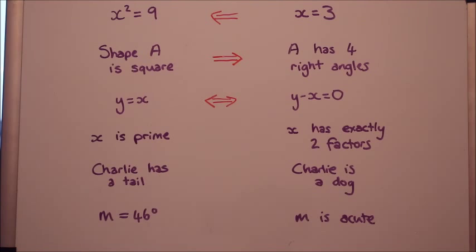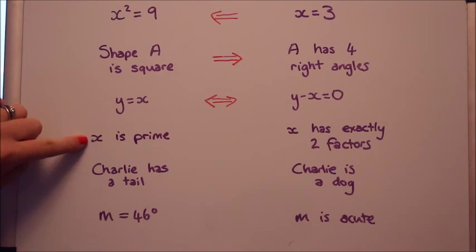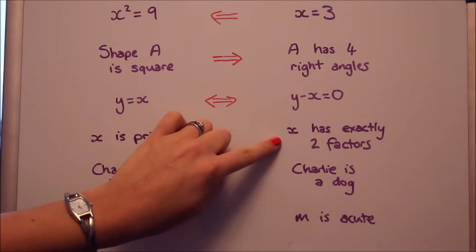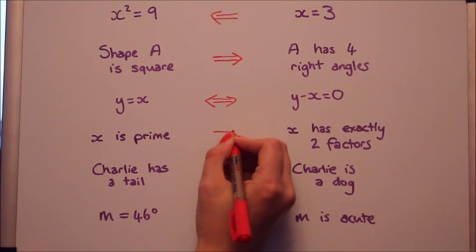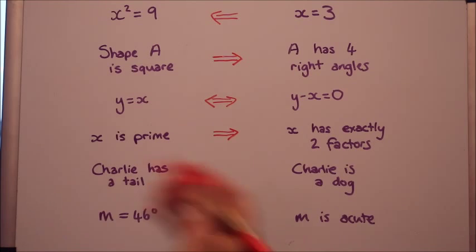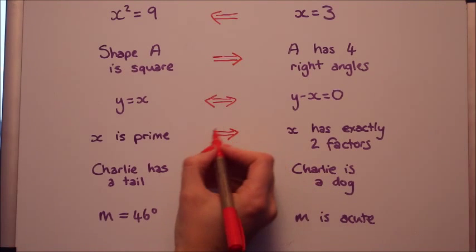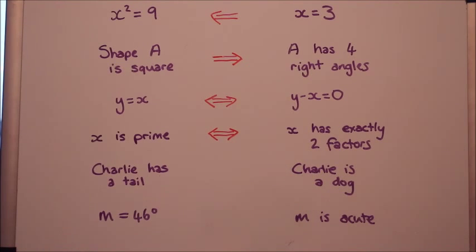Okay, have you had a go? I hope so. I hope they're all right. Let's look at this one. If x is prime, x must have exactly two factors. Any prime number has two factors, one and itself. So yes, that way is implied. And also, going back the other way, if x has two factors, it's got to be prime. So those two are equivalent as well.